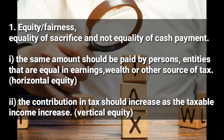The first principle is equity or fairness. Equity looks at equality of sacrifice and not equality of cash payment. Equality of cash payment is where a rich person pays 200 as tax and a poor person also pays 200 as tax. Equity is about equality of sacrifice — if I have ten thousand I pay a tax of one hundred, and if a rich person has ten million, they pay maybe one hundred thousand.